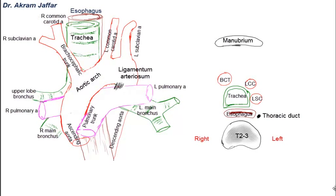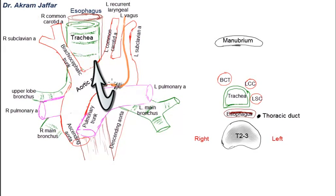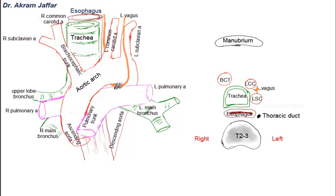Now let's draw some of the nerves. The left vagus nerve enters the thorax between the left common carotid and left subclavian arteries. It crosses the left side of the arch of the aorta and gives off the recurrent laryngeal nerve that hooks around the ligamentum arteriosum, then ascends up between the trachea and esophagus. In the section, this is the site of the vagus nerve between the left common carotid and the left subclavian arteries, and here is the left recurrent laryngeal nerve ascending between the trachea and esophagus.